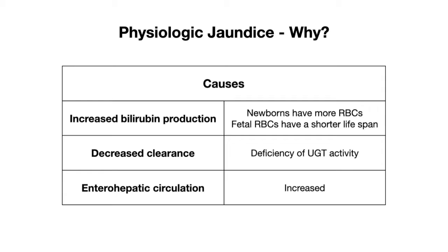However, at birth an infant's gut is sterile — they have far fewer bacteria in the gut — so very little if any conjugated bilirubin gets converted by these bacteria. As a result, that conjugated bilirubin is converted into unconjugated bilirubin by an enzyme called beta-glucuronidase in the intestinal mucosa. This unconjugated bilirubin is then reabsorbed through the intestinal wall and recycled into the circulation — a process known as the enterohepatic circulation of bilirubin.